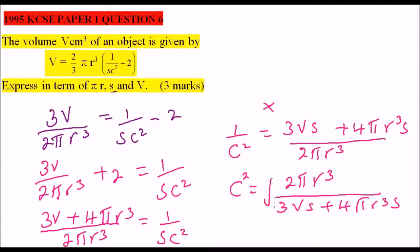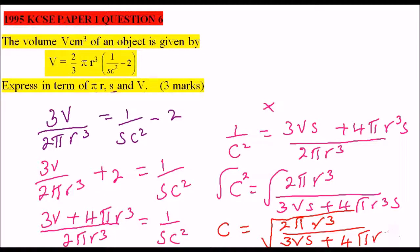So you get the square root for both sides, and therefore we have made C the subject of the formula. C equals the square root of 2 pi R cubed, all this is divided by 3VS plus 4 pi R cubed S. So that is how you make as the subject of the formula, and you get yourself three marks. That brings us to the end of that question.